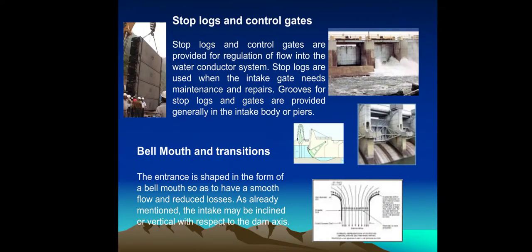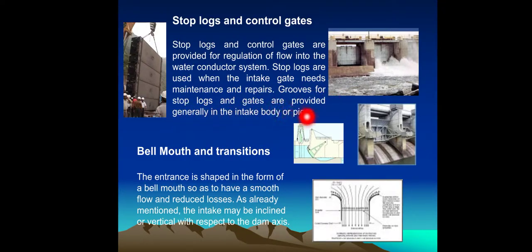Stop Logs and Control Gates: Stop logs and control gates are provided for regulation of flow into the water conductor system. Stop logs are used when the intake gate needs maintenance and repairs. Grooves for stop logs and gates are provided generally in the intake or pipes. The entrance is shaped in the form of a bell mouth so as to have smooth flow and reduce losses.